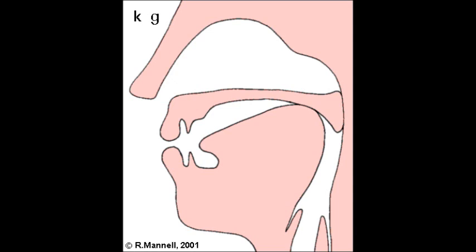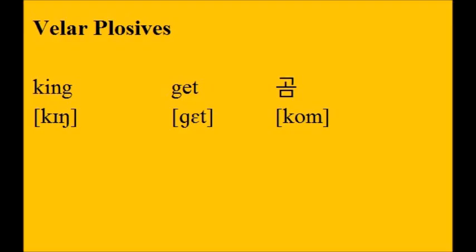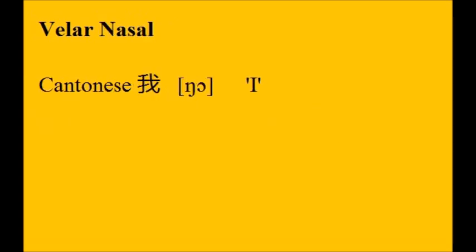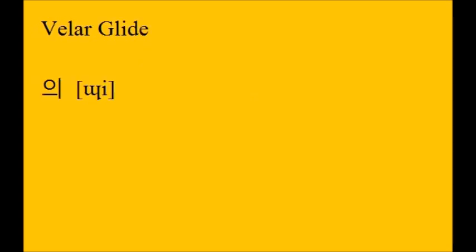Velar sounds are made with the body of the tongue approaching or coming into contact with the velum, the soft palate. Both English and Korean have velar stops, as in the words KING, GET, and KOM. The velar nasal N is only found at the ends of syllables in English and in Korean, but can appear at the beginning of syllables as in Cantonese, as in NGWO. Korean has a velar glide, which appears only in the diphthong E. We will discuss diphthongs in more detail later.